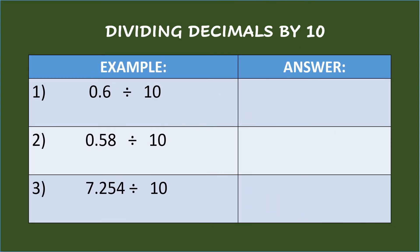Dividing decimals by ten. First example: six-tenths divided by ten. Since there is only one zero in the divisor, move the decimal point of the dividend once to the left and place the decimal point afterwards. So the answer is six-hundredths.